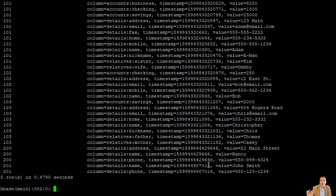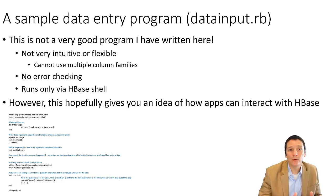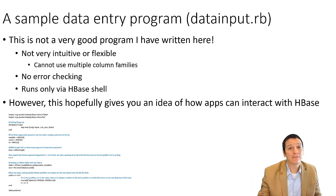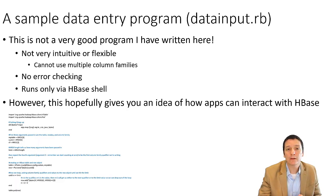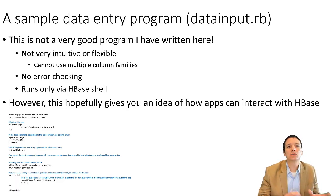The data passed in at the command line got entered into the table, and of course it has the same timestamp because the Ruby application was creating an object and inserting it all at once. One thing to note is that this is not a very good program — it's not very intuitive, it requires specifying things in just the right order, and it's not flexible because it can't handle qualifiers for multiple column families. But hopefully it gives you an idea of how programs can interact with HBase, and you could modify it in many ways to add flexibility and error checking.